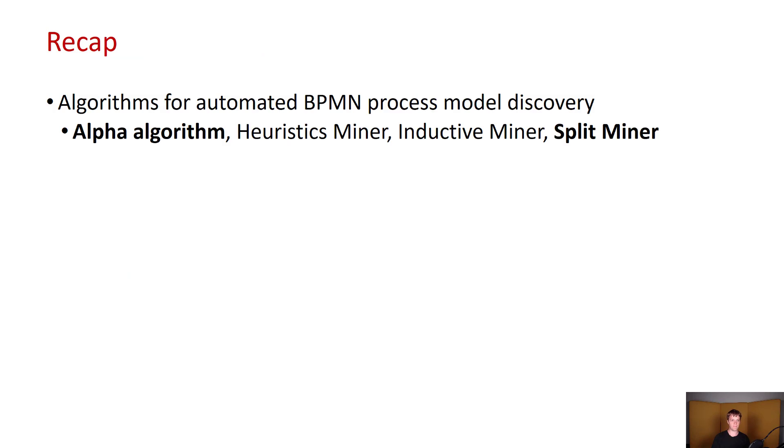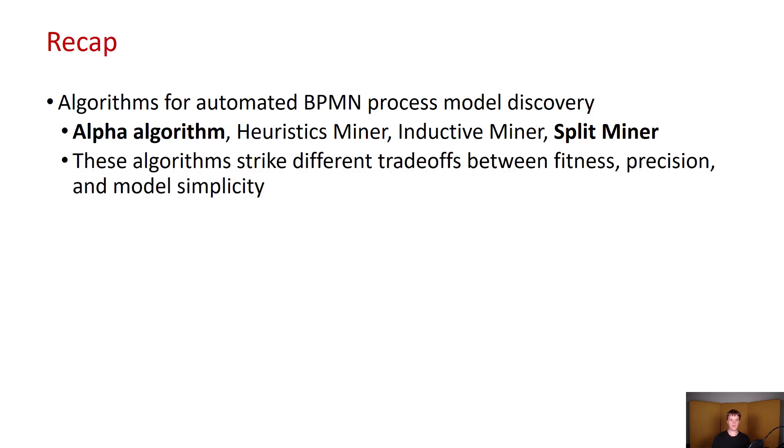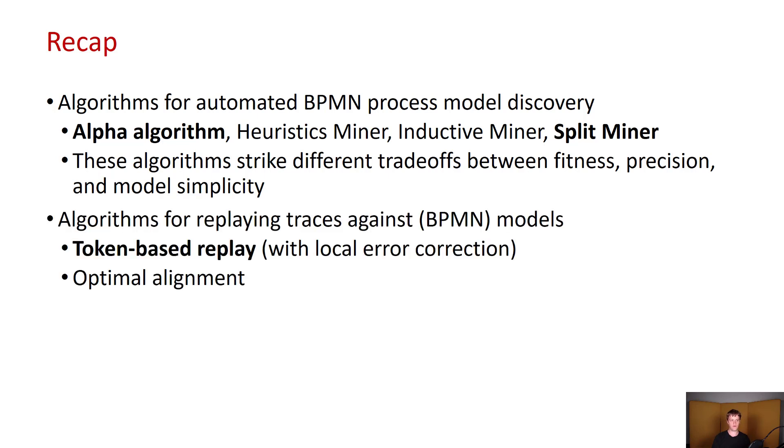And now to recap, we have covered algorithms for automated BPMN process model discovery, such as alpha algorithm, heuristics miner that we actually didn't discuss much, deductive miner and also the details of split miner. These algorithms strike different trade-offs between fitness, precision and model simplicity. We have also covered some algorithms for replaying traces against BPMN models. Here we covered token place replay with local error correction, meaning that you place tokens whenever necessary into the model and count the tokens that are left after the process execution. And we also took a brief look at how to work with optimal alignments.